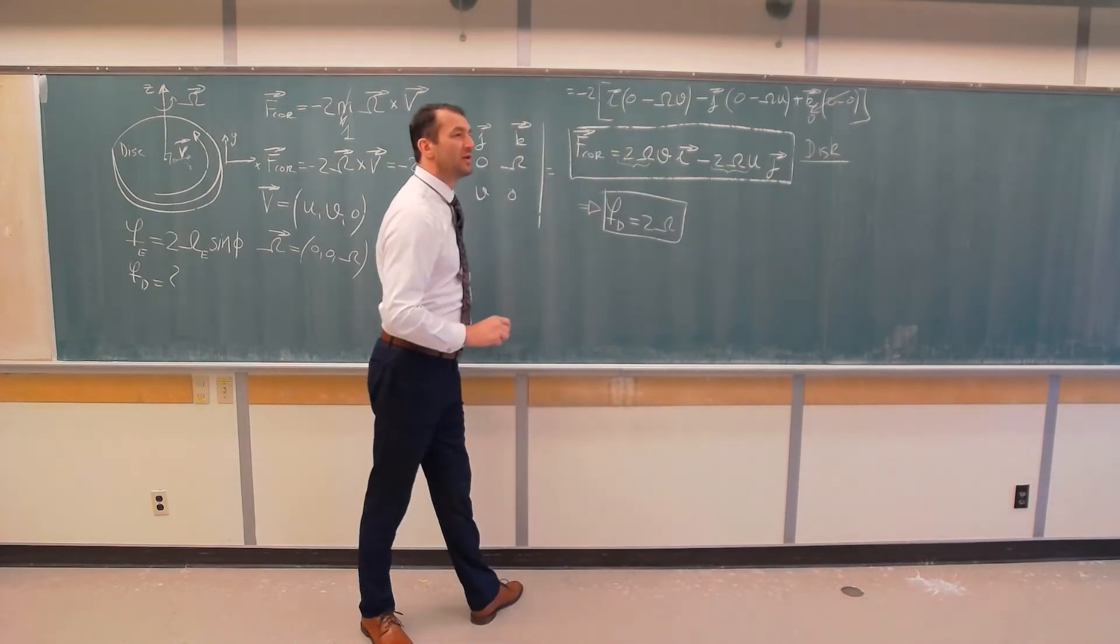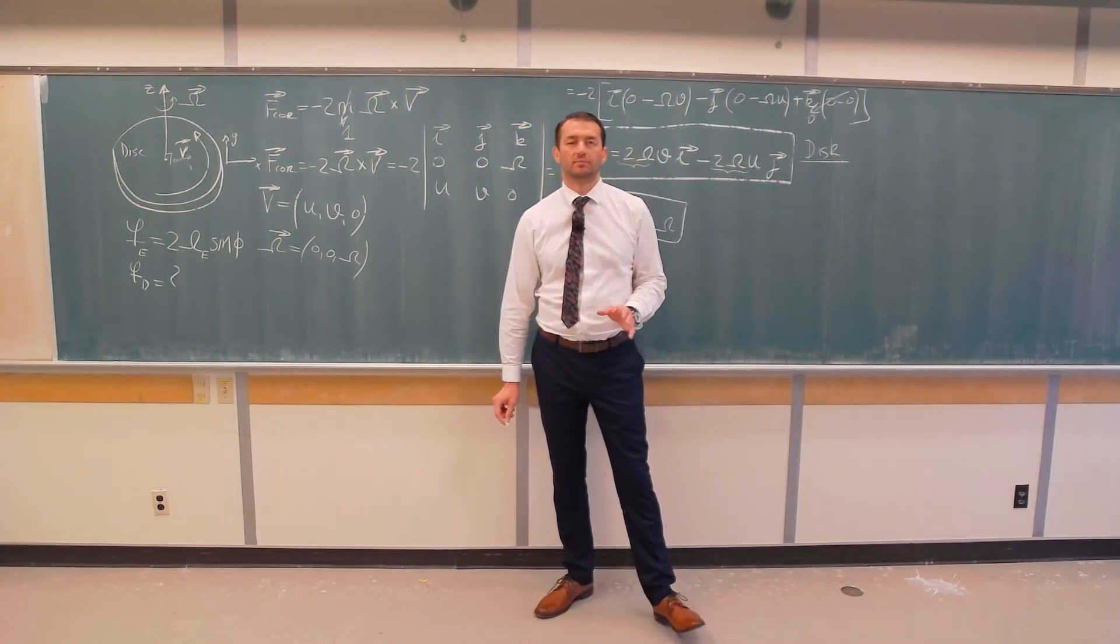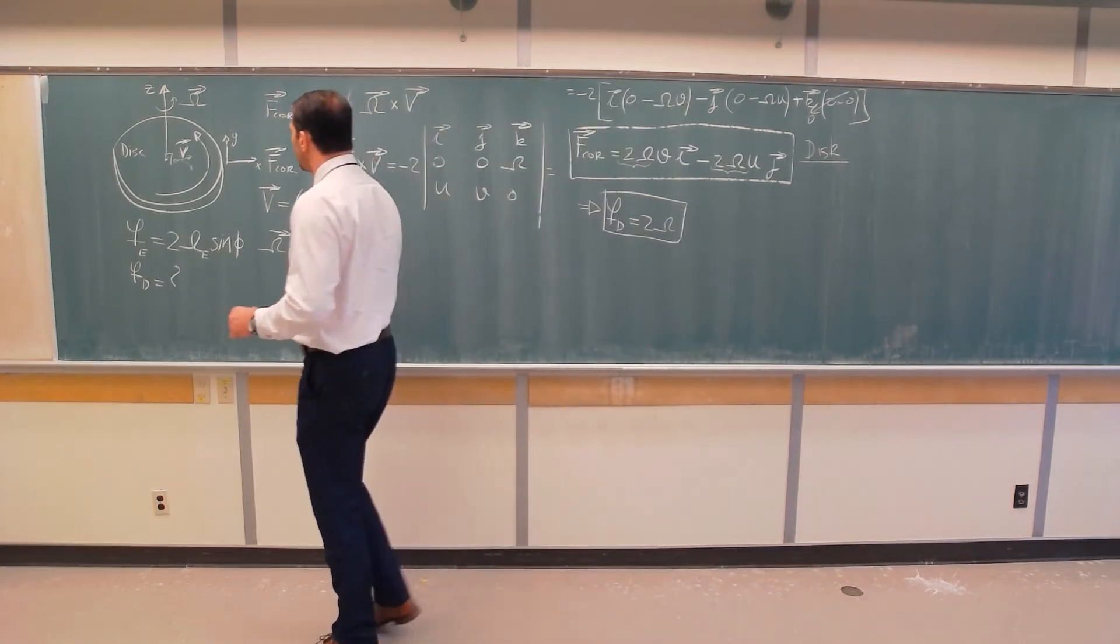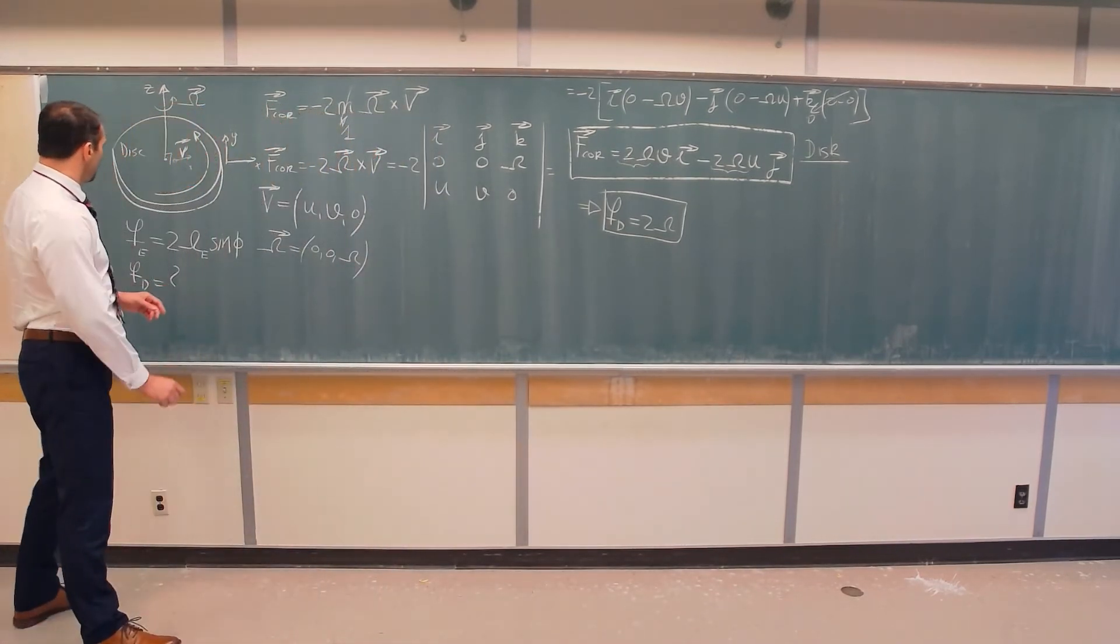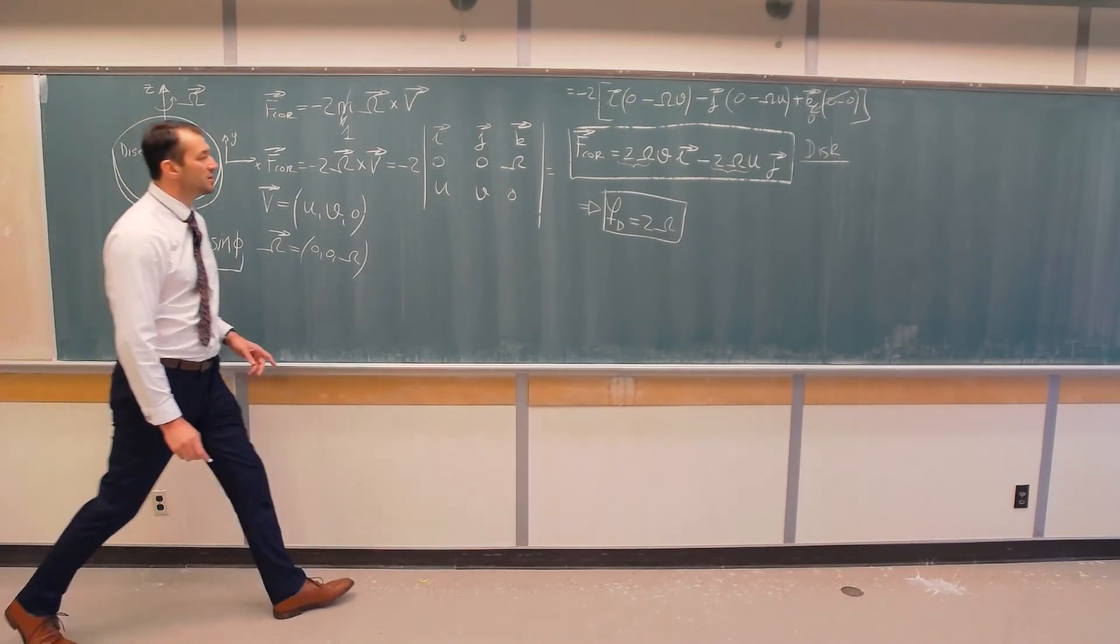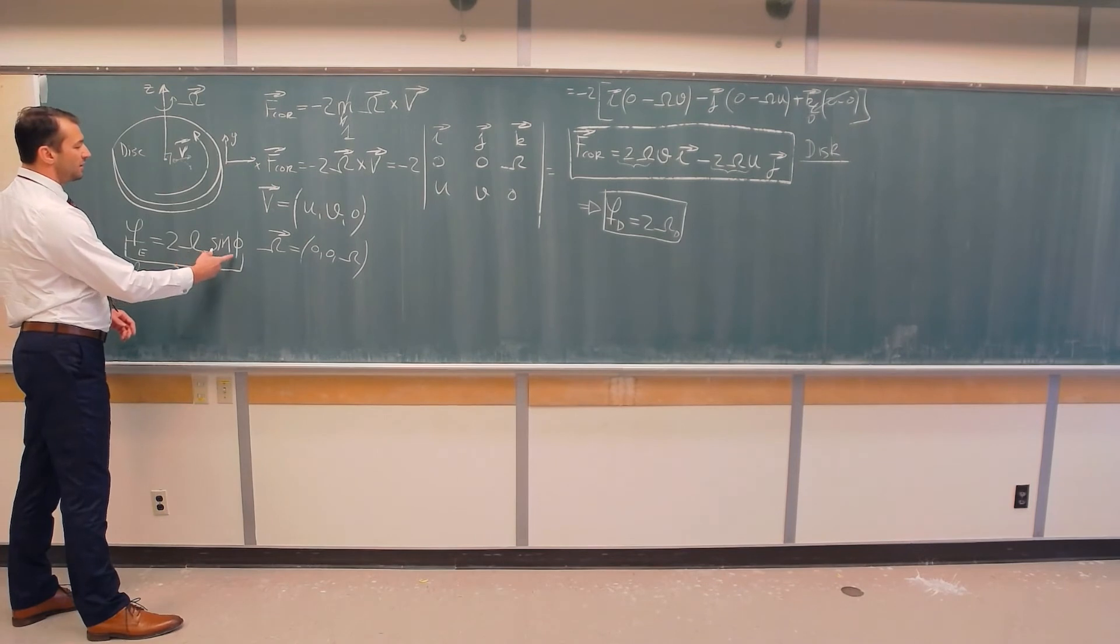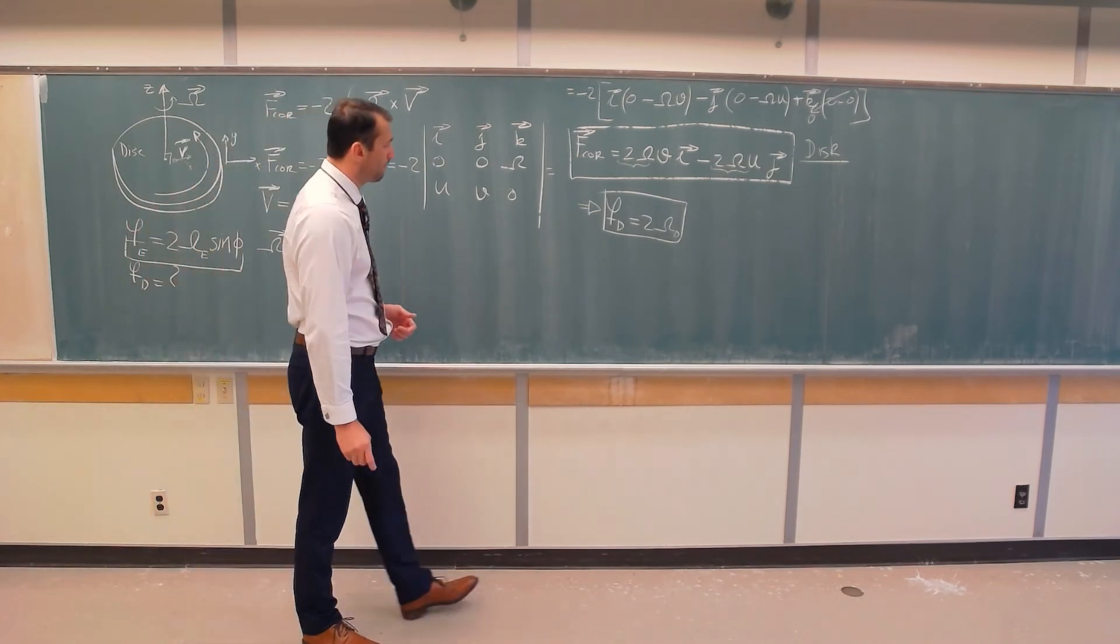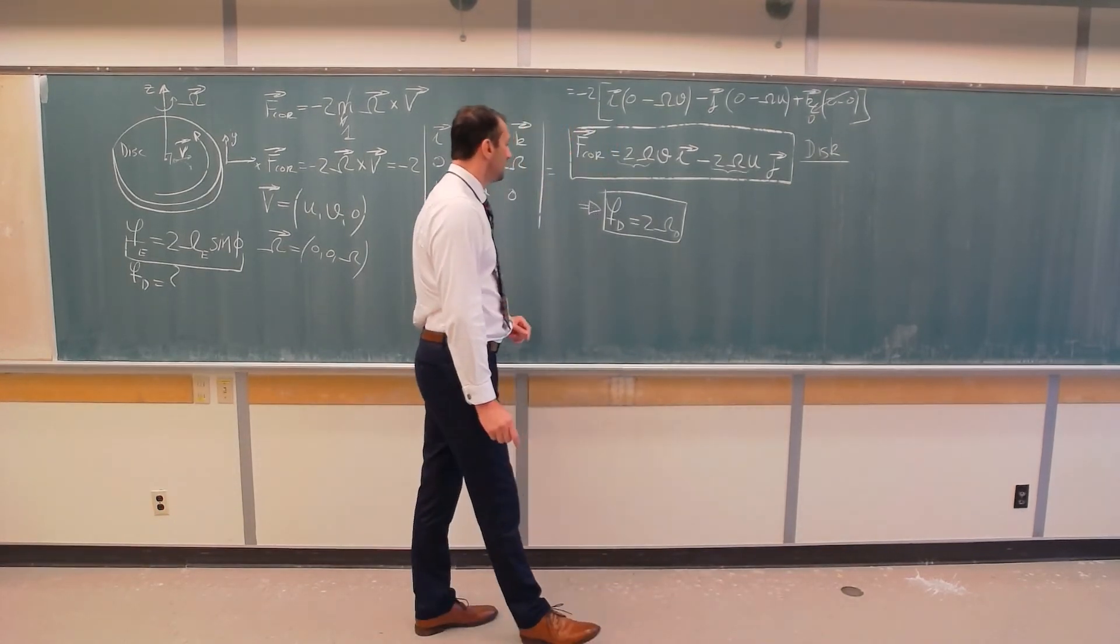And you will remember that we already derived this expression in, I think, in my video on traditional approximation and planetary vorticity. But at any rate, you can see now the relationship between the Coriolis parameter for the disk and Coriolis parameter for spherical earth. They are very similar. Of course, here is omega of the disk. They are very similar, but spherical earth also has sine phi, namely dependency on the latitude. So, two times angular velocity of the disk.